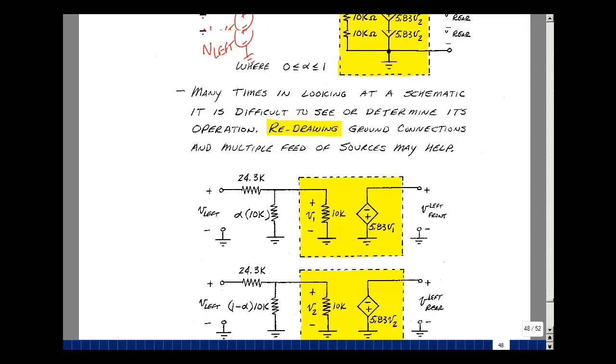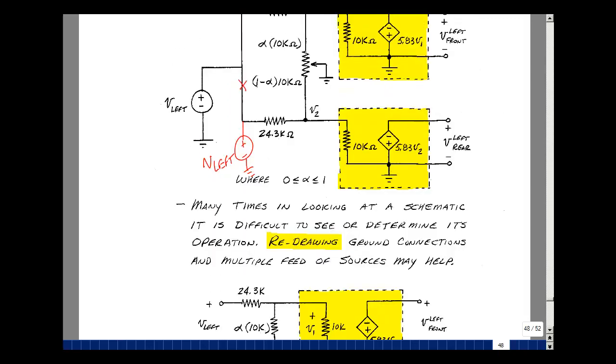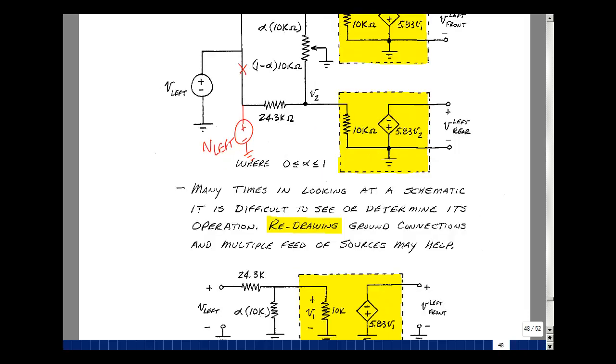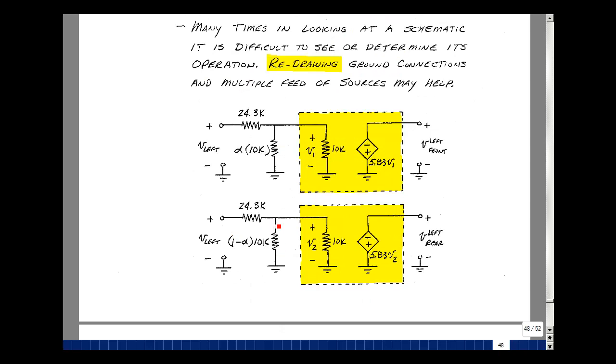Do the same thing for the bottom half of the circuit. I'm going to flip it over a little bit here. But I've got a Vleft from this node back to ground. I've got a 24.3k, and then I've got 1 minus alpha times 10k back to ground. And that's also in parallel with the 10k, and then the controlled source for the left output for the rear. So here's the 24.3k resistor, and then the 1 minus alpha times 10k to ground, 10k in parallel with that, and then the controlled source for the output for the rear speaker. And now I've got my circuit redrawn.